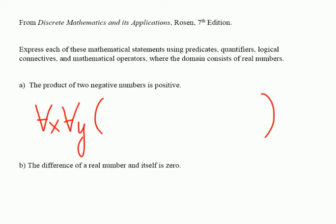It turns out that what we're really saying here is that for every x and y, if x is negative, if y is negative, then x times y has to be positive. So we have to restrict it somehow.